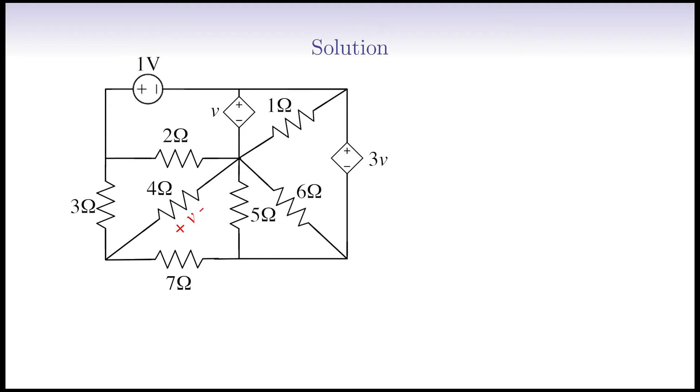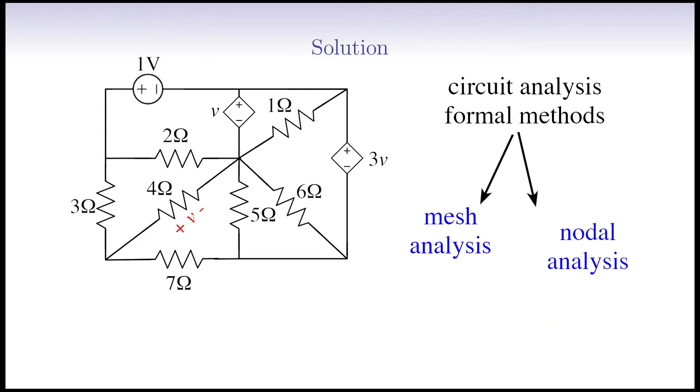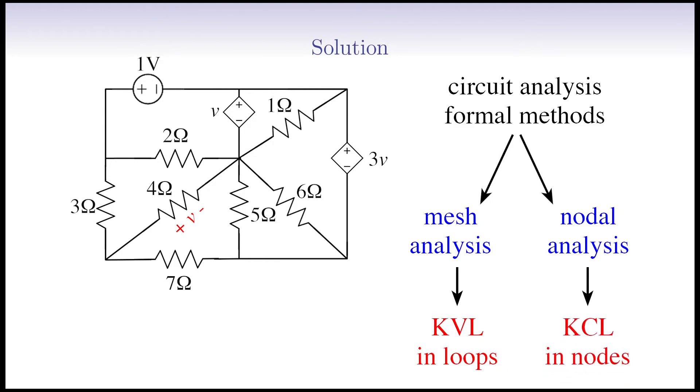If you remember, in Physics Puzzle number 3, we mentioned that there are two formal methods to analyze electrical circuits: the mesh analysis method and the node analysis method. By the way, you can find the link for the previous physics puzzle down in the description. The mesh analysis method is based on applying KVL in loops, and the node analysis method is based on applying KCL on nodes. However, we've emphasized that if the complete analysis of the circuit, that is finding the voltages and currents of all branches in the circuit, is not the case, we normally are not very willing to use those formal methods.